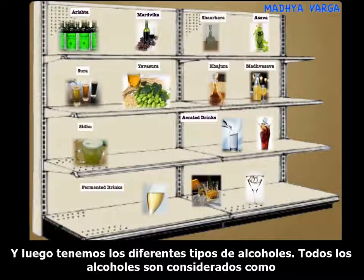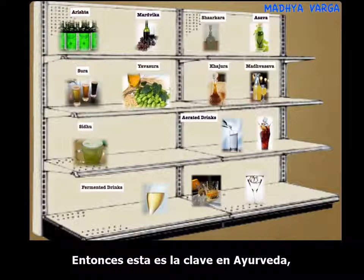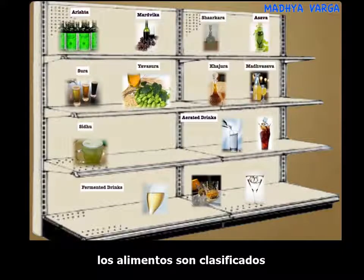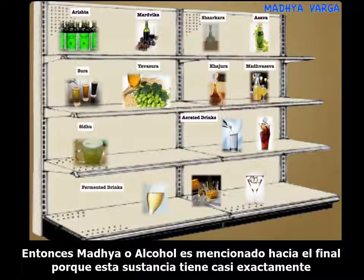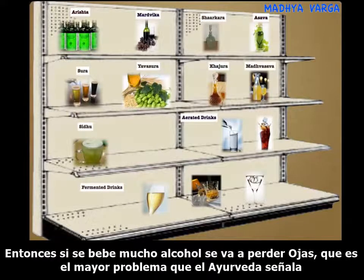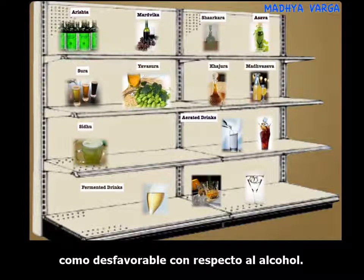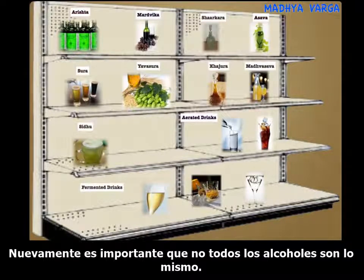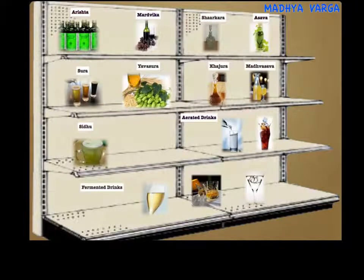We have different types of alcohols — all alcohols are considered Ushna and Ruksha, and therefore they are opposite to the quality of Ojas. In Ayurveda, foods are classified based on the impact they make on the Dhatus and Ojas. Madhya or alcohol is mentioned towards the end because it has almost exactly the qualities opposite to Ojas — so if you drink too much alcohol, you will lose your Ojas, which is the biggest problem Ayurveda points out as unfavorable regarding alcohol. It is important to note that all alcohols are not the same; some are comparatively safer, and all these categories are described with their properties elaborated.